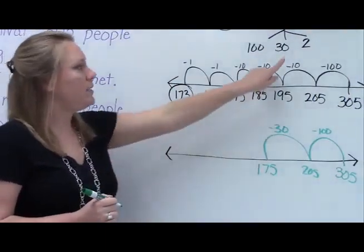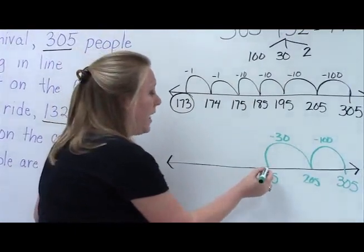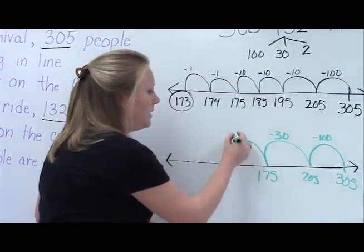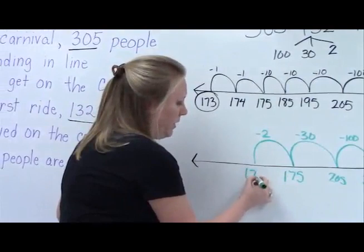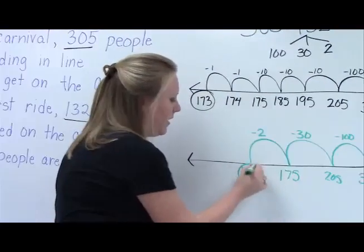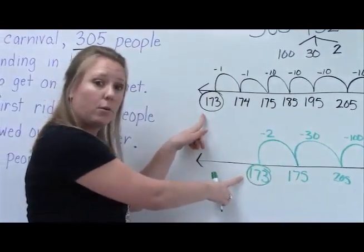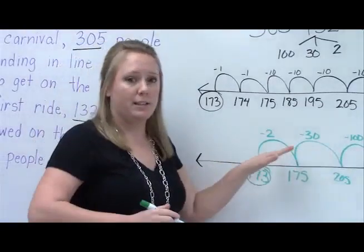So all we have left is the two ones, and that could also be grouped to minus 2, which gives us 173. Still the same answer as before, but we've grouped our tens and our ones.